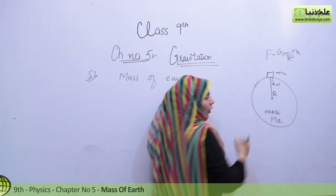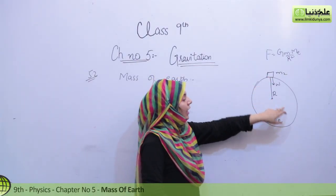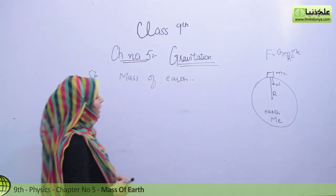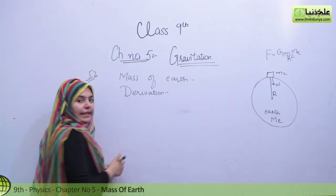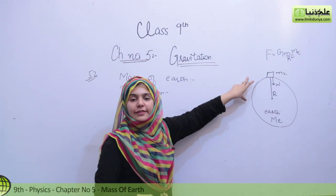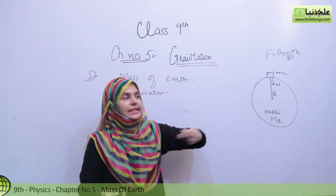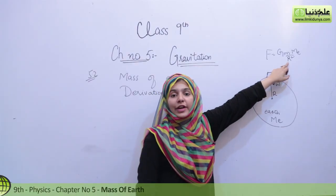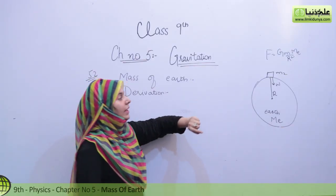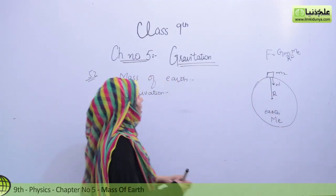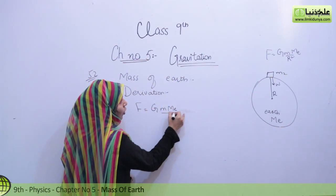This body's weight is acting downward, and R is the radius of Earth with M_E as the mass of Earth. Now let's start our derivation. We have considered mass of Earth and a body on Earth's surface so that the radius of Earth doesn't change. So F equals G times M times M_E over R squared.